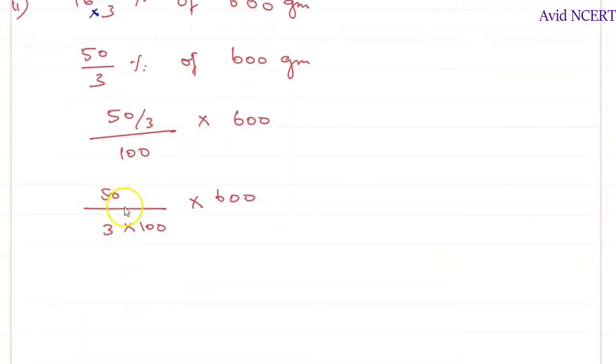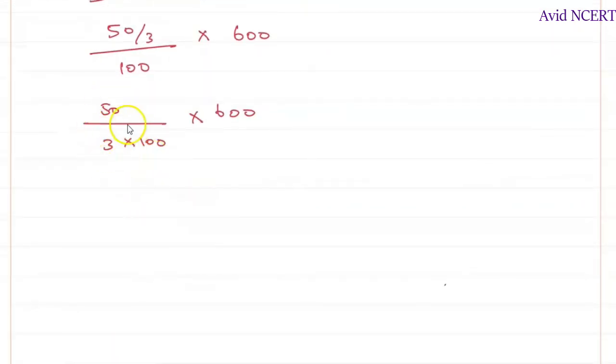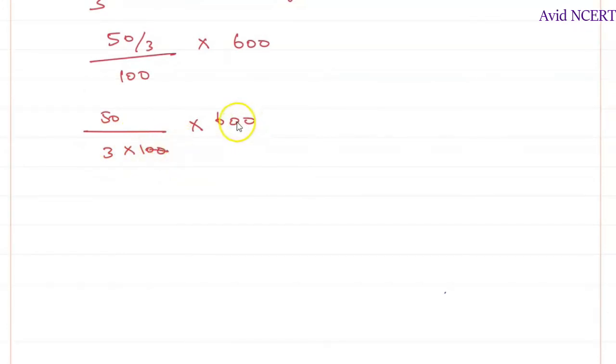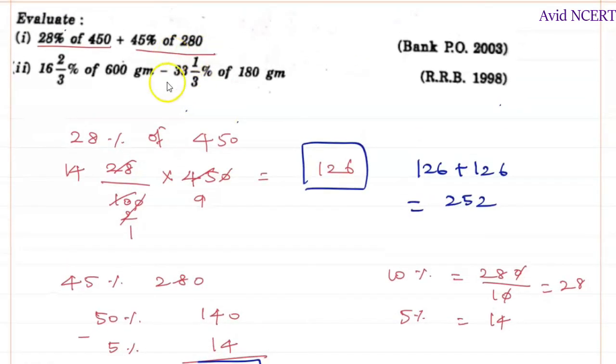This can be written as 50 by 3 in the denominator, times 100, times 600. You can directly write it in the first step; I just wanted to explain, that's why I'm writing two steps. Simplify this: zero zero gets cancelled, 3 times 1 and 3 times 2 is 6, and 50 times 2 is 100.